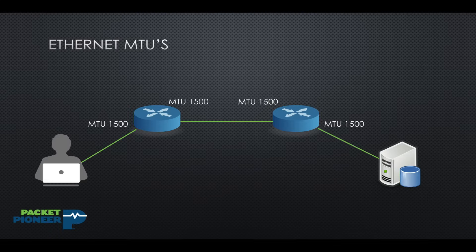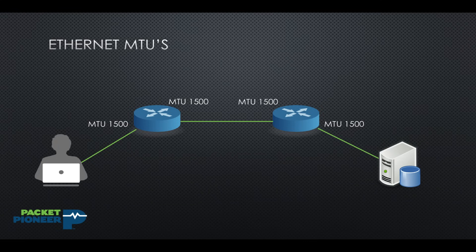Now we want to start off talking about MTUs. There are different types of MTUs depending on the OSI model layer that we're talking about. Usually when we mean MTU, what we're referring to is the Ethernet MTU — the Ethernet Maximum Transmission Unit. This is something that's set on switches and routers along an Ethernet path, and it basically specifies how large the encapsulated data inside the Ethernet frame will be — the maximum amount of data transmitted on that connection.